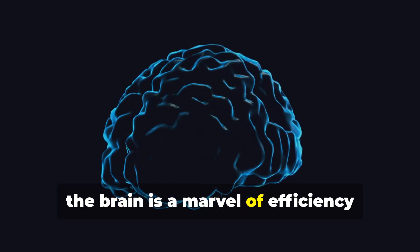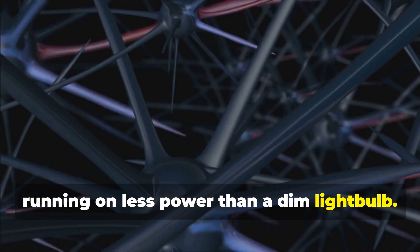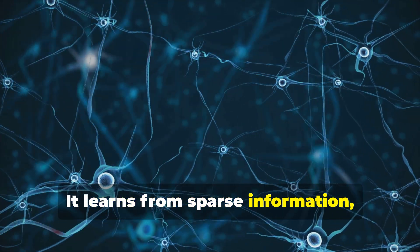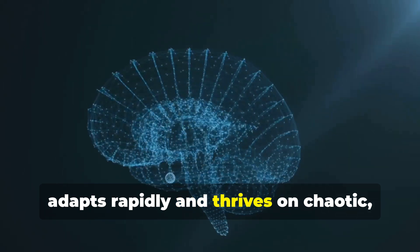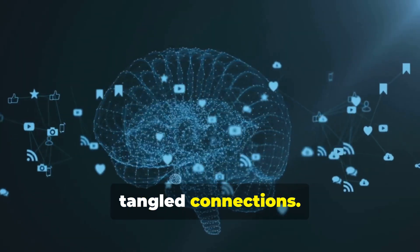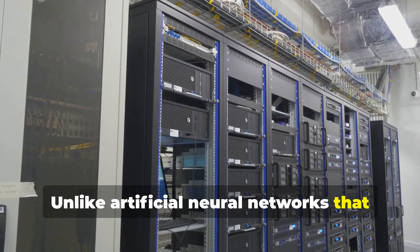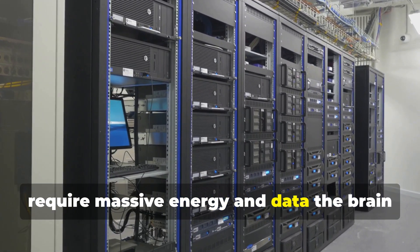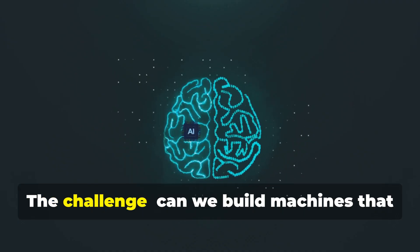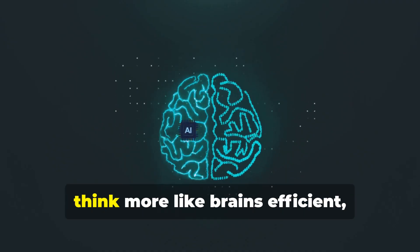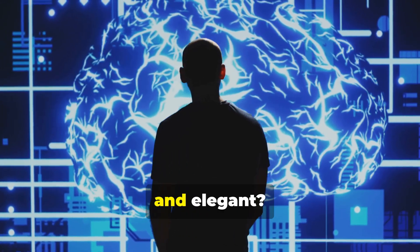Sculpted by evolution, the brain is a marvel of efficiency, running on less power than a dim light bulb. It learns from sparse information, adapts rapidly, and thrives on chaotic, tangled connections. Unlike artificial neural networks that require massive energy and data, the brain finds order in chaos.